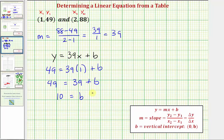Now we have all the information we need. We know the equation of our linear function would be y equals 39x plus b. And since b is 10, it's plus 10. And since the vertical intercept is 10, as an ordered pair, that would be the point zero comma 10.